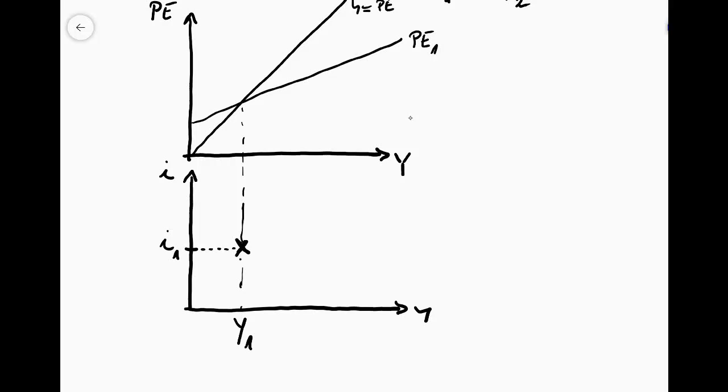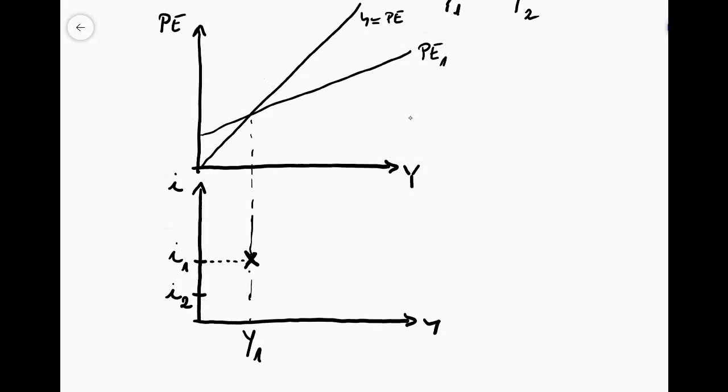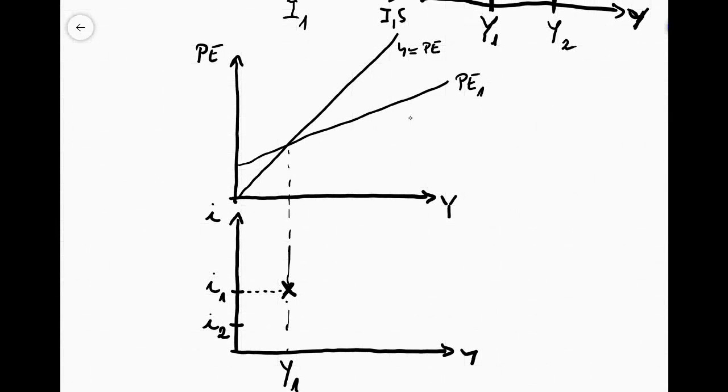So now let us assume that we have a reduction in the interest rate. You can see that because Y was the common variable in both of the graphs, I did not assume a change in Y. Instead, I used the nominal interest rate here as the variable which changes because it will be an exogenous change in the planned expenditures. So what happens if we have a lower interest rate in the economy? And you already know what happens. We know that there will be more investment.